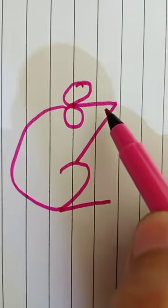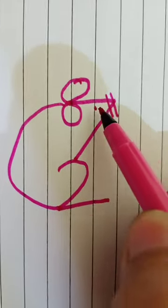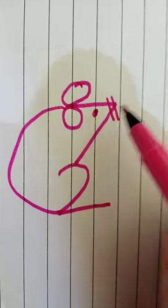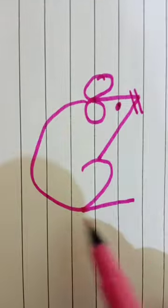Draw eyes and beard. Draw eyes and beard. Finally, draw the S-shaped tail.